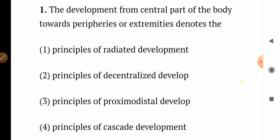Question number 1. The development from the central part of the body towards the peripheries or extremities denotes: Option 1 - Principles of Radiated Development. Option 2 - Principles of Decentralized Development. Option 3 - Principles of Proximodistal Development. Option 4 - Principles of Cascade Development.